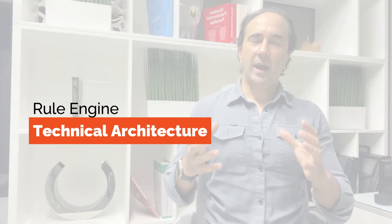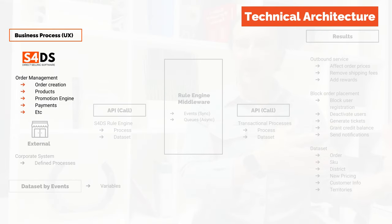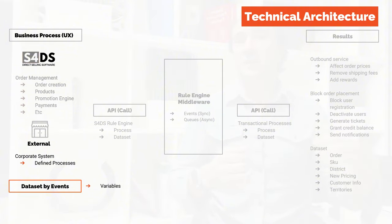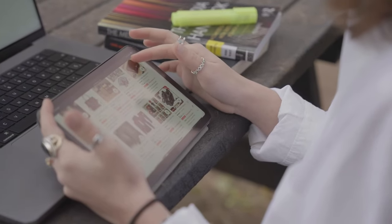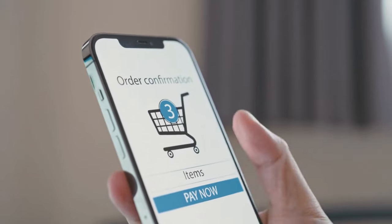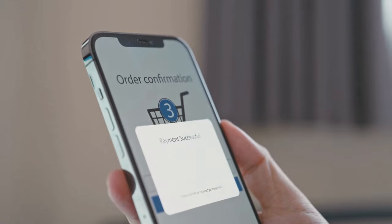Let's discuss how the technical architecture of the system works. The first element can be either S4DS modules — our business modules — or your own backend or platform, whatever manages your orders: when the order is being created, when a product is being added, when there is a cross-selling promotion page, or during the payment process, etc.